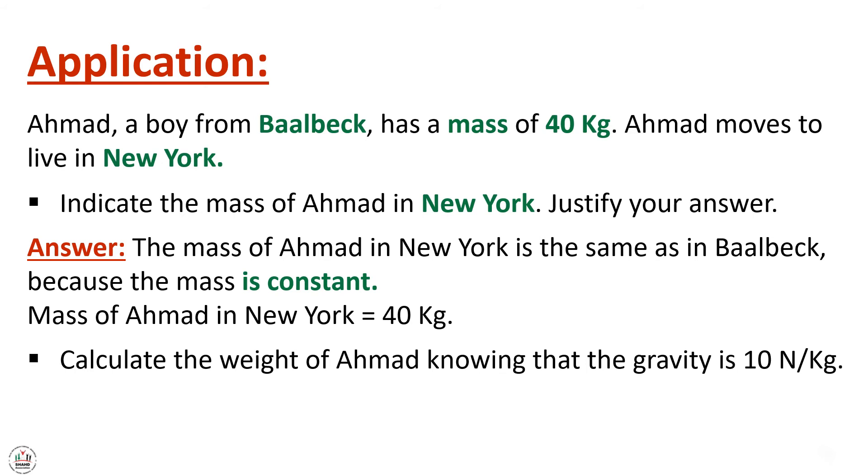Now calculate the weight of Ahmad knowing that the gravity is 10 newton per kilogram. First, we write the given formula. Weight equals to mass times gravity. The mass is 40 kilograms. So we multiply it by the gravity which is 10 newton per kilogram. Therefore, weight equals mass times G equals 40 times 10 equals 400 newton.